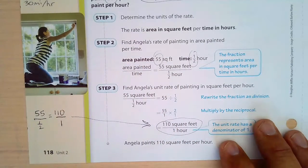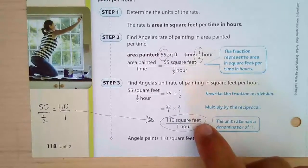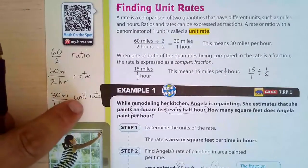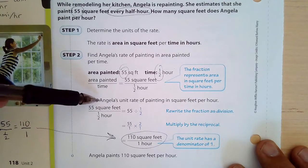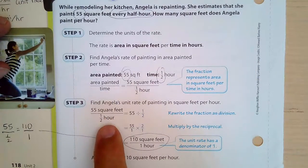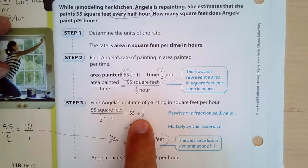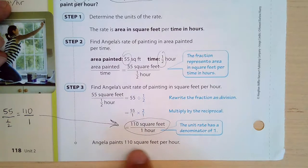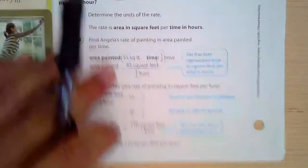So the unit rate is 110 square feet per hour. The official method: dividing fractions, you flip the second fraction and multiply — 55 times 2 equals 110, and 1 times 1 equals 1 — giving 110 square feet per hour. The unit rate has labels, making it different from a plain ratio.